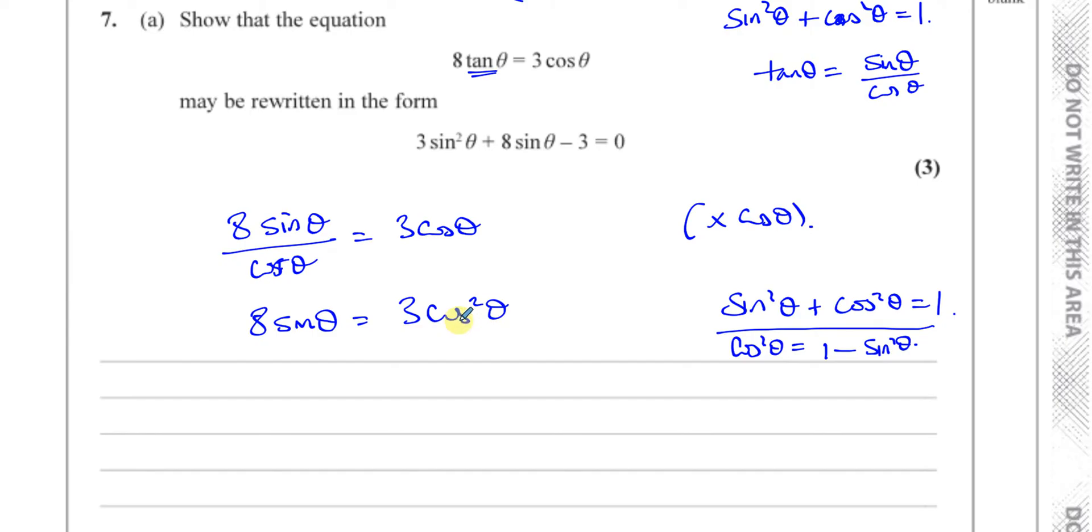And if we replace the cosine squared theta with 1 minus sine squared theta, we'll have an equation with just sine thetas and sine squared thetas in it as is required. So let's do that and see what happens. So you have three times, instead of cosine squared theta, I'll write 1 minus sine squared theta. I'm going to expand the bracket. So 8 sine theta is equal to 3 minus 3 sine squared theta.